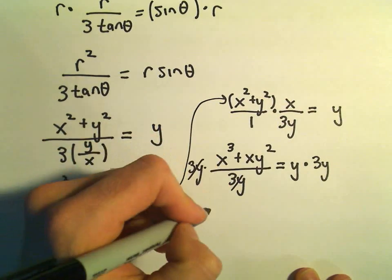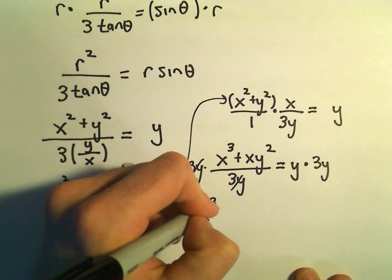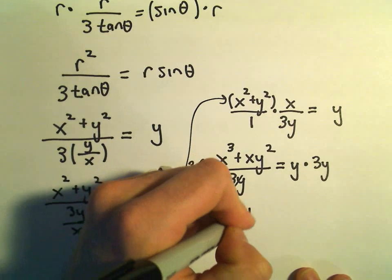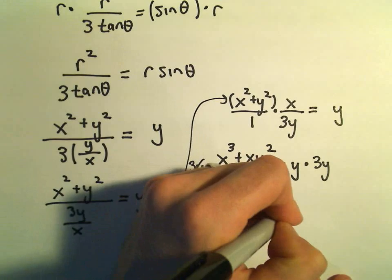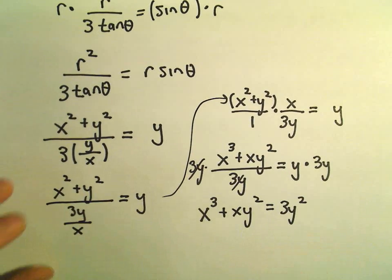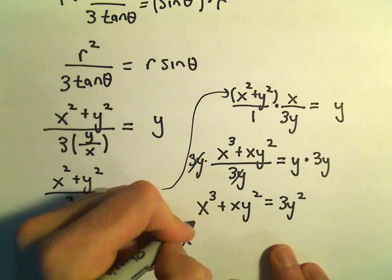So they'll cancel out on the left. We'll be left with x³ + xy² = 3y². And if you wanted to, we could always make one side 0.